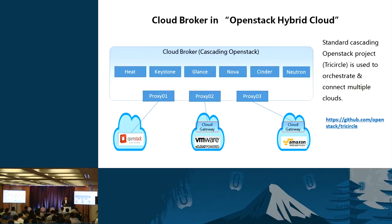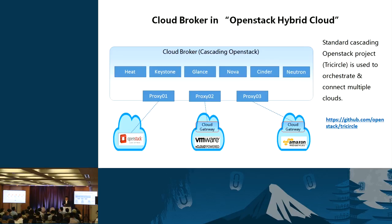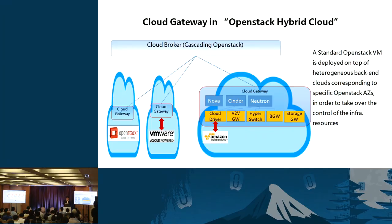Diving deeper into the cloud broker layer: under this end-to-end OpenStack hybrid cloud, the cascading OpenStack serves as the umbrella or unified entry point for resource quota management, API exposure, and service catalog covering all backend hybrid clouds. This cloud broker layer is fully standardized cascading OpenStack-based — also named Tri-Circle — used to orchestrate and connect multiple clouds regardless of the semantic differences sitting behind this unified cascading OpenStack umbrella.